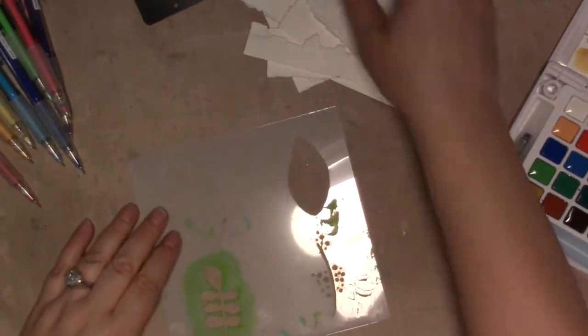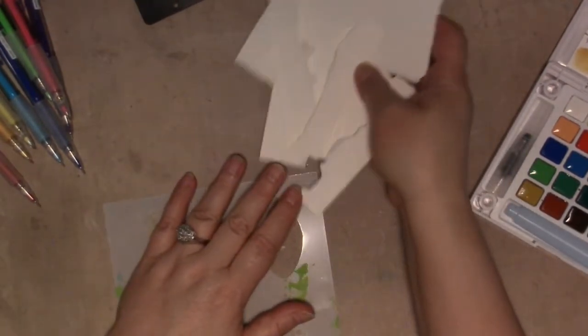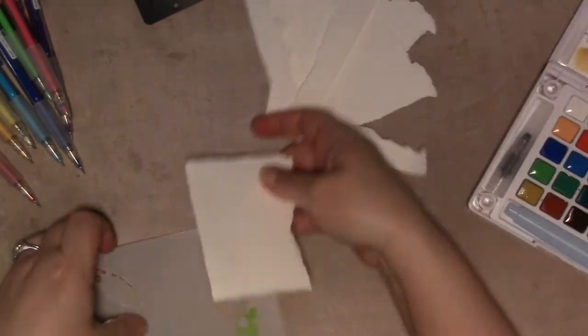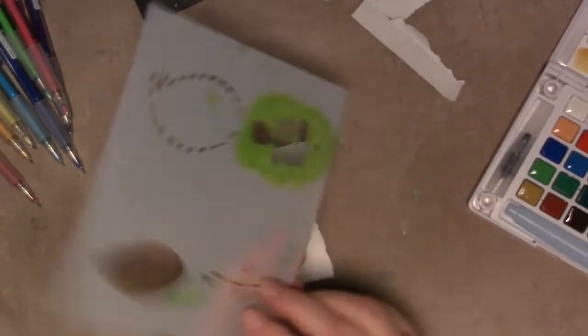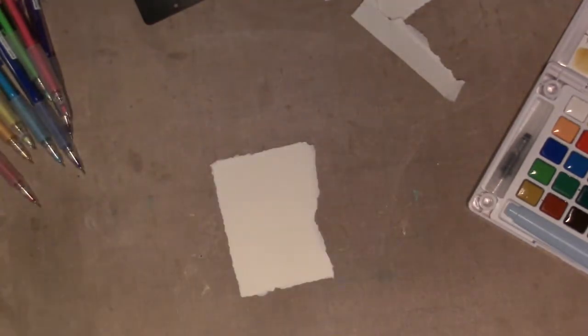While those are sitting there getting wet, I have some scraps here of watercolor paper. I'm going to grab one of them at random. And this is for one of my stencils, four square number, what is this? I can't read that.